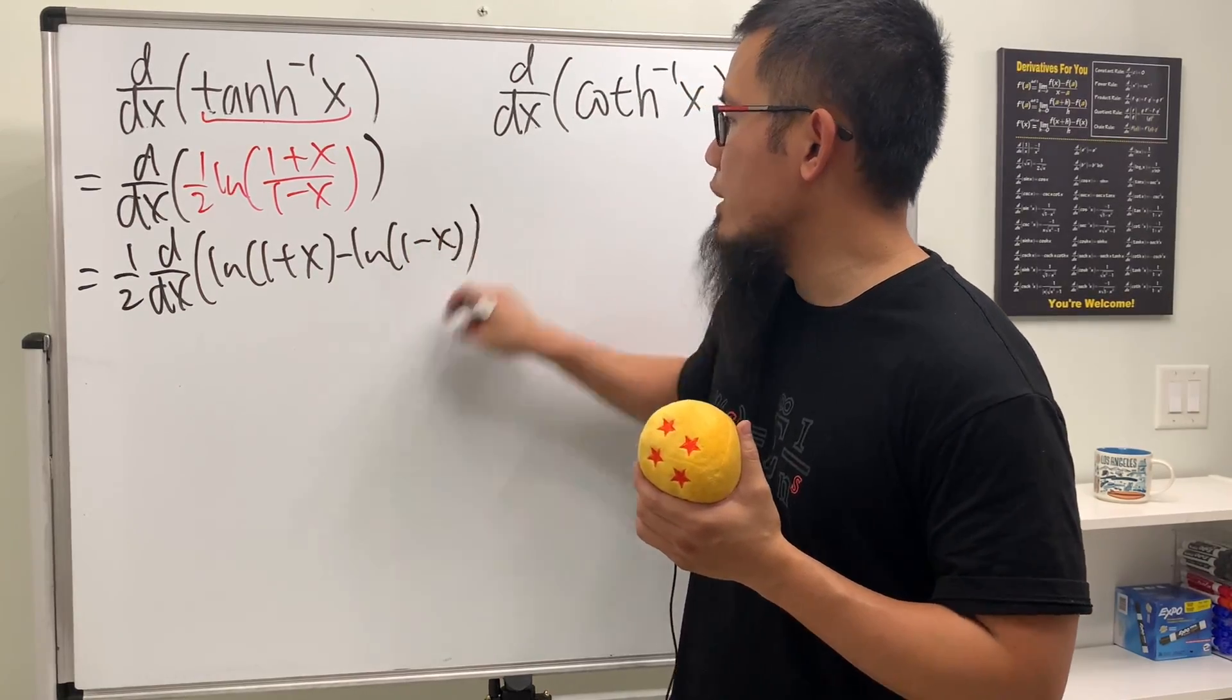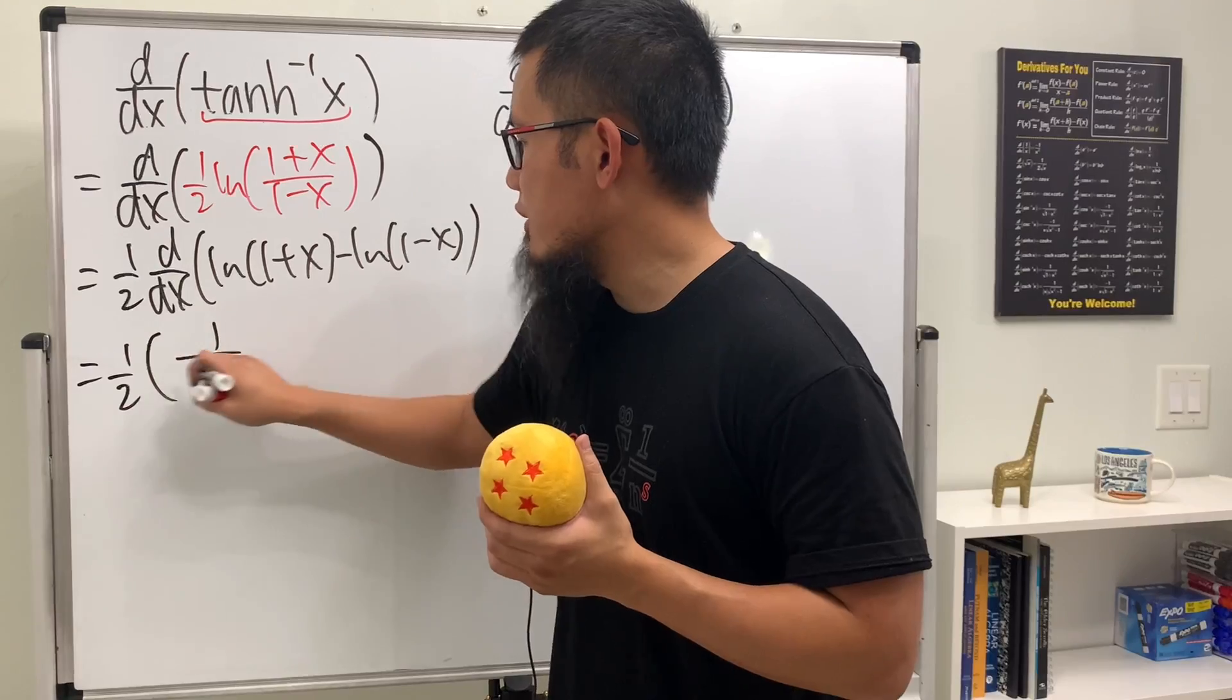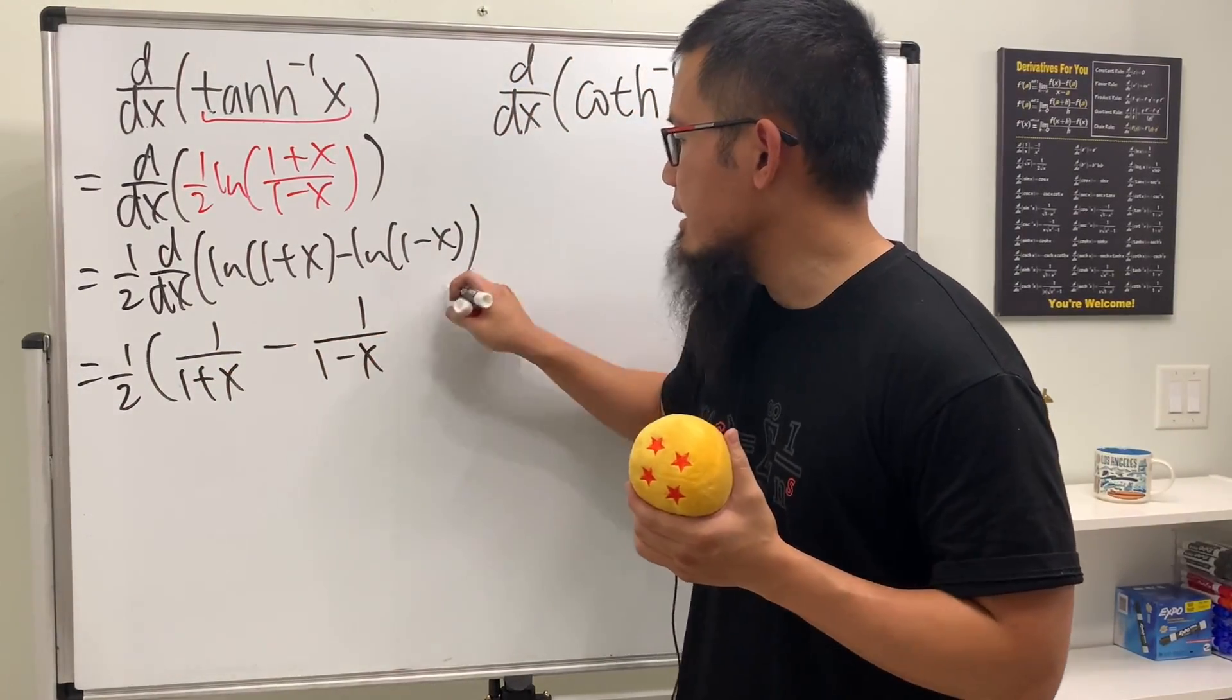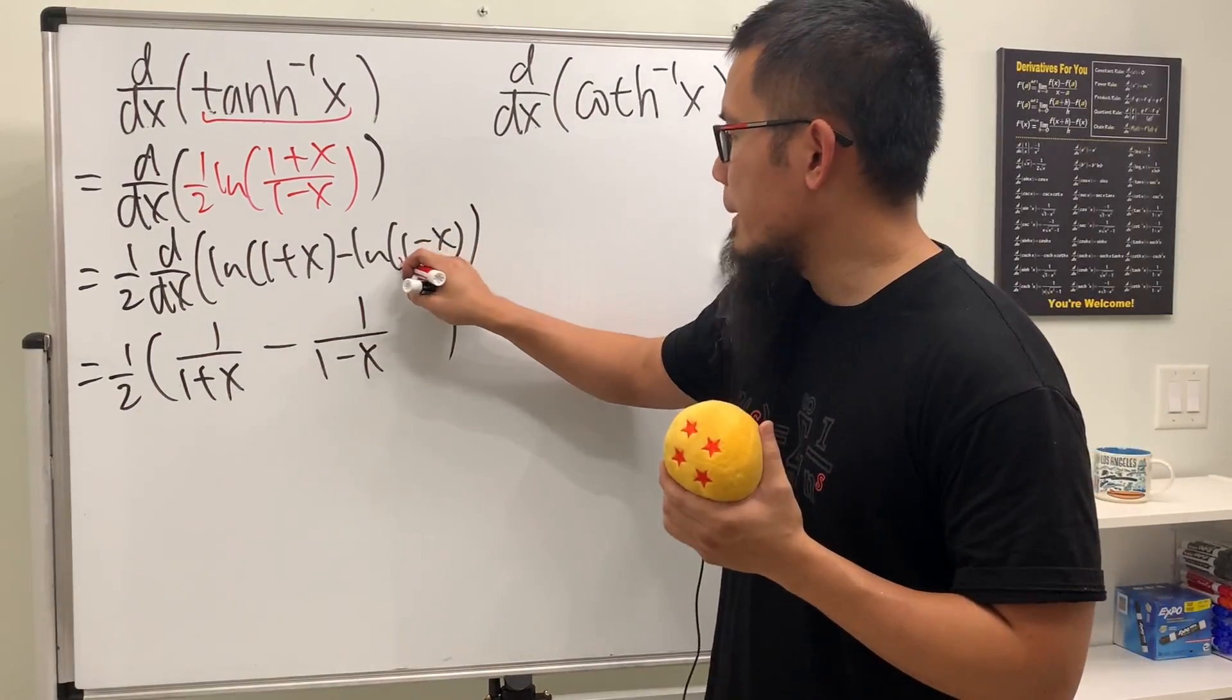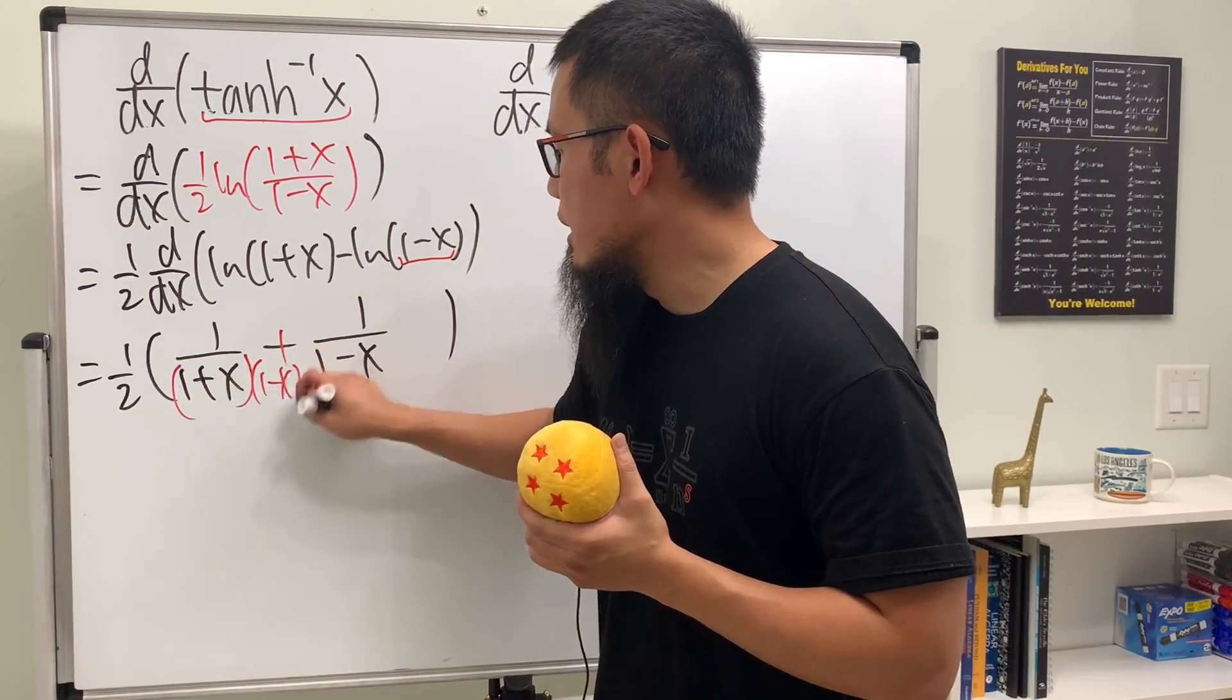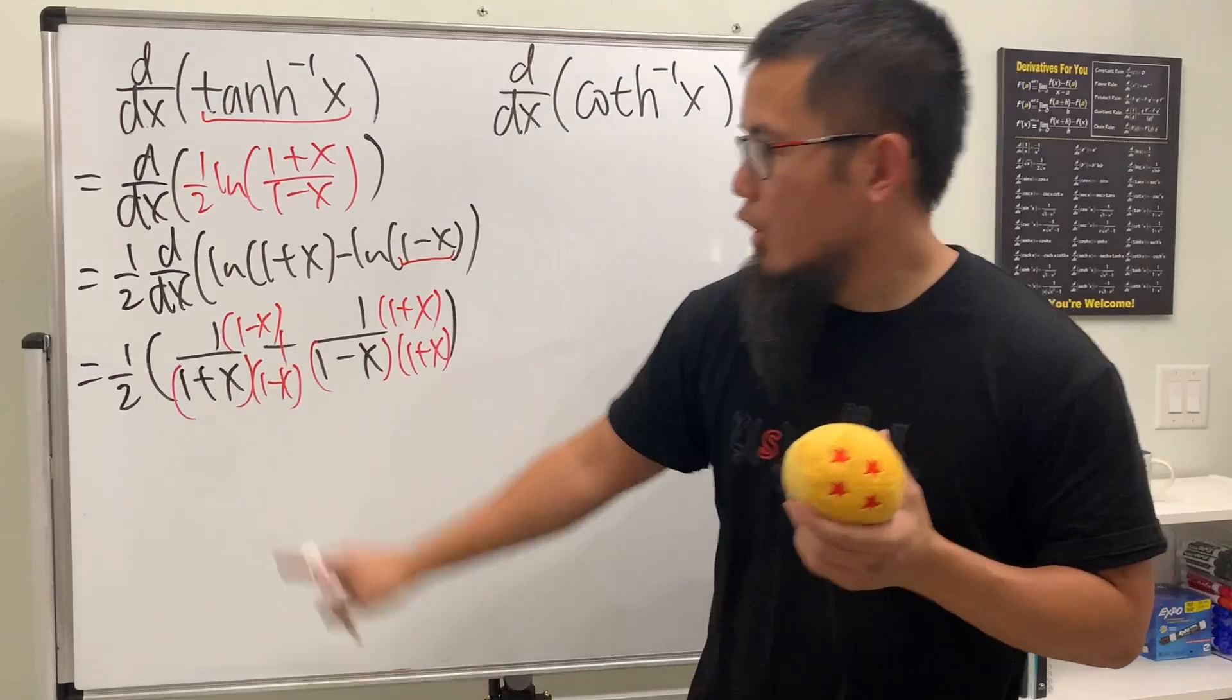Now we are ready to differentiate and we will just get 1/2, and then parentheses, this is going to give us 1/(1+x), and then minus, this is going to give us 1/(1-x). Don't forget the chain rule though—multiply by the derivative itself, which is going to be negative 1, so let's make that positive.